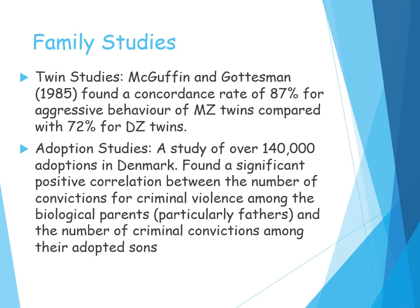MacGuffin and Gotsman found that there was a higher concordance rate of aggressive behaviour in MZ twins in comparison to DZ twins. For MZ twins, the concordance rate was 87%, and it was 72% for DZ twins. Further research has found that genes account for about 40% of individual differences in all types of aggression. The higher concordance rate seems to suggest that there is a genetic element leading to human aggression.